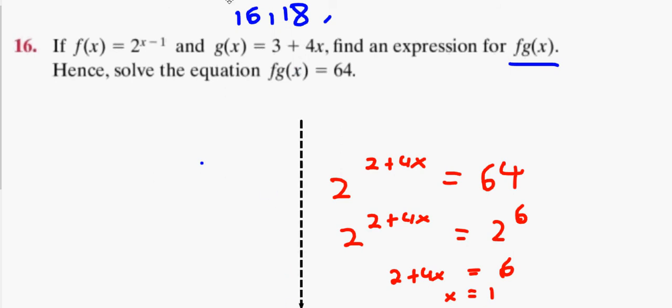I'll just use the standard log, if that's okay—log base 10. So I'll use log base 10: 2 to the power of (2 + 4x) equals log 64 base 10. What's the rule about powers and logs? You can bring it up front. So I can get (2 + 4x) times log 2 equals log 64.